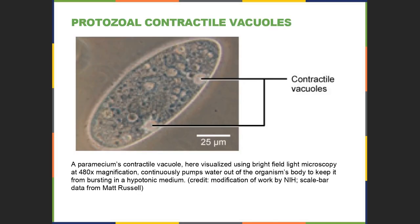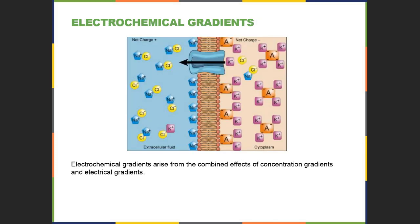Protozoans have contractile vacuoles to deal with osmosis — water continuously comes into the cells through pores, and the contractile vacuoles contract to remove excess water so cells don't burst. That movement of water and electrolytes allows for electrochemical gradients to occur at tissues and cells, playing a role in many physiological processes. In anatomy and physiology courses you'd learn about proton pumps and similar mechanisms.